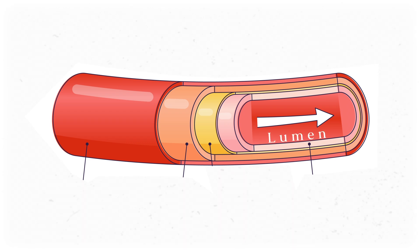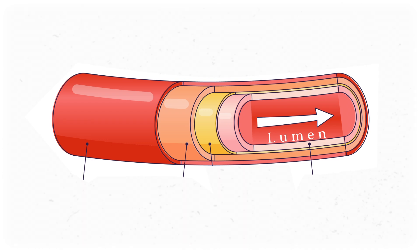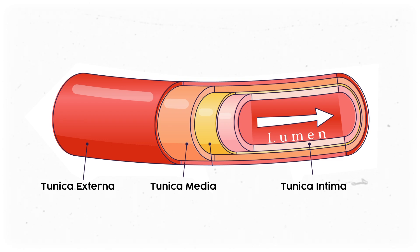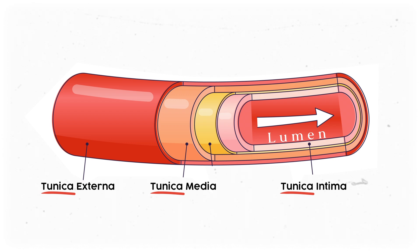Each vessel, whether it's an artery or a vein, is wrapped up in three different layers, each of which has its own job. There's the tunica intima, the innermost one; the tunica media, the middle one; and the tunica externa, the outermost one. Tunica translates to 'coat' in Latin, so I think of each layer of a blood vessel as a different layer of clothing.